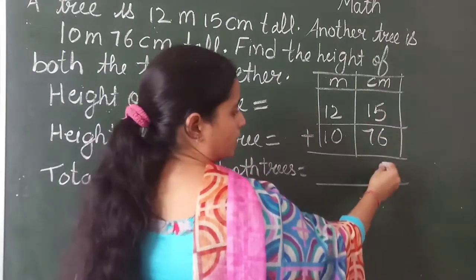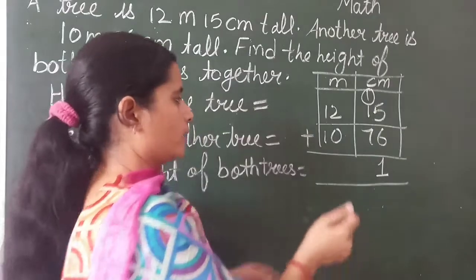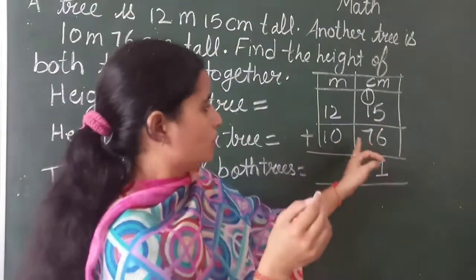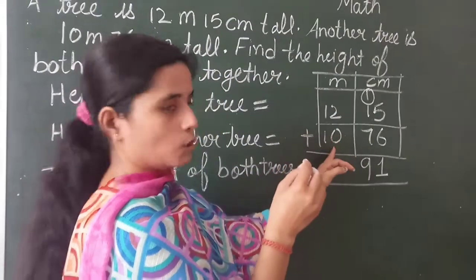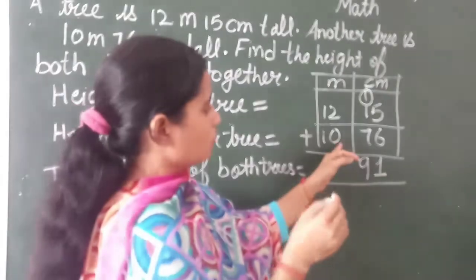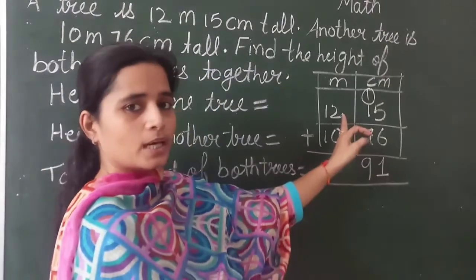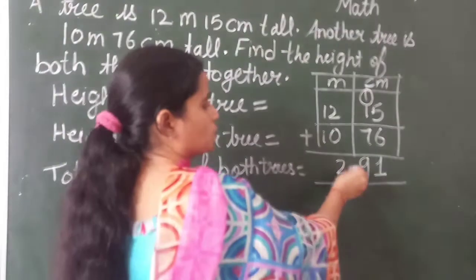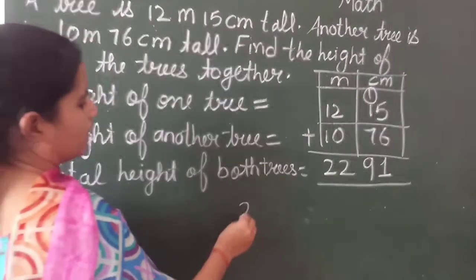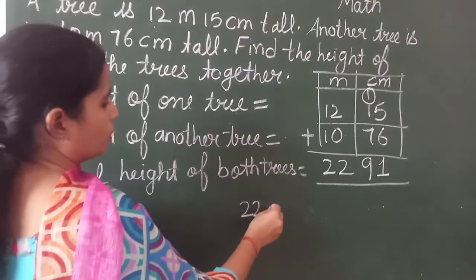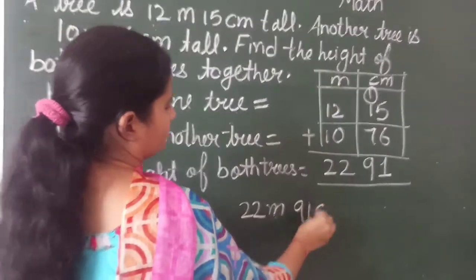So what is 6 plus 5 it is 11. Always right side digit we will put here and left side digit 1. 7 plus 1 it is 8 and 8 plus 1 is 9. Here 2 plus 0. I told you addition facts also that if we will add 0 with any digit the answer will be the number itself. So it is 2 and 1 plus 1 it is 2. It means the height of both trees together is 22 meter and 91 centimeter.